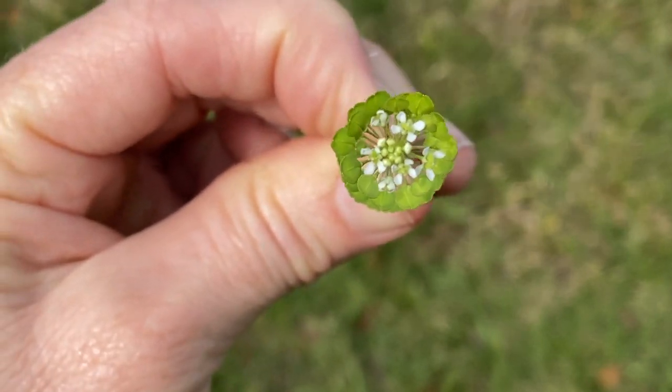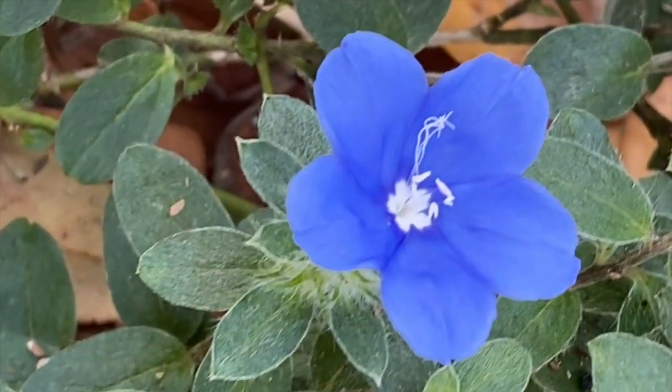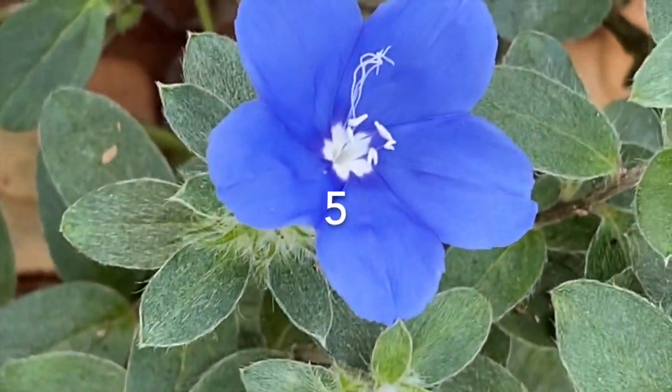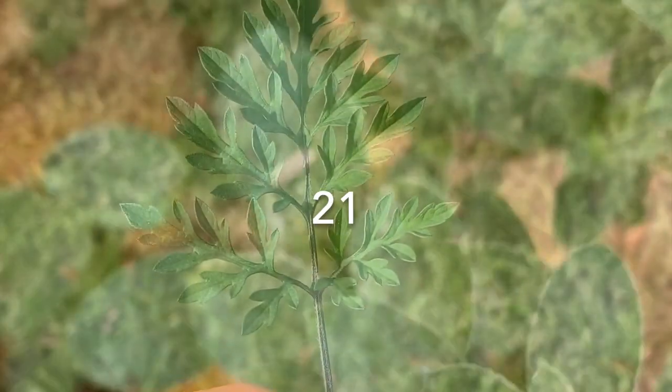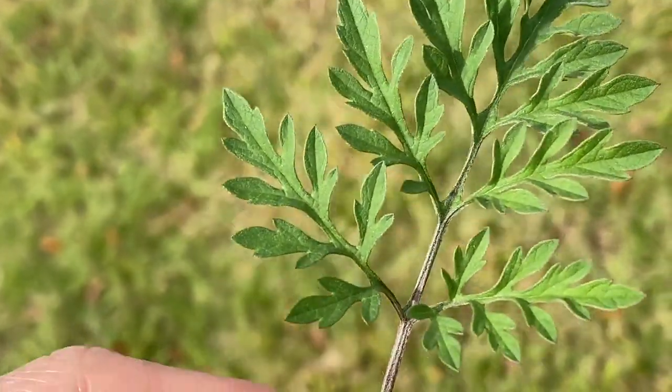And why is it that so many things in nature are divided into numbers of 3, 5, 8, 13, 21, and with the same proportions of the golden ratio.